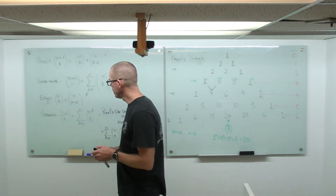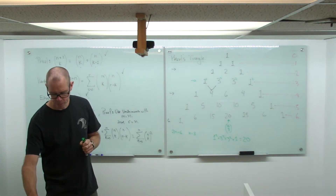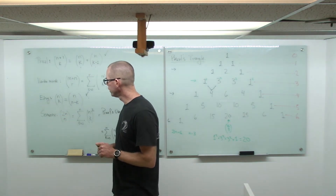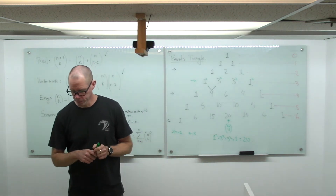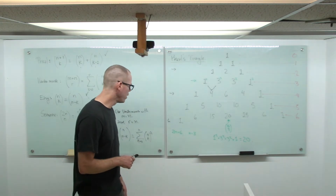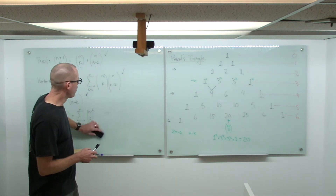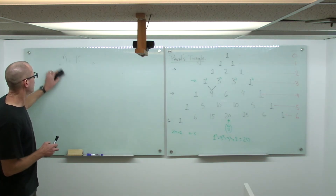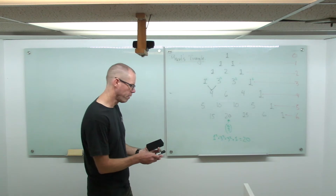That identity doesn't really have a name — it's just some identity. These easy identities aren't named. So we've been working with a bunch of different counting techniques: the product rule, the complement rule, the sum rule, the principle of inclusion-exclusion, and binomial coefficients counting subsets of a given size. Let's start putting some of these things together and solving some problems.